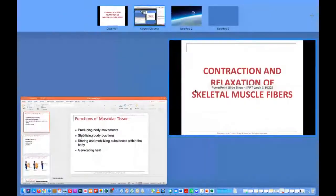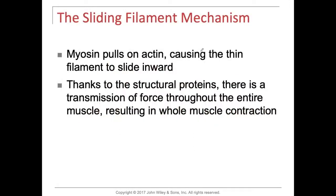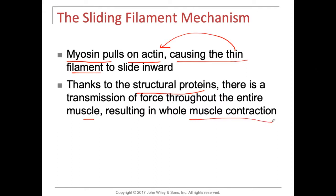Welcome back. We are going to continue our muscle lecture with understanding what takes place with the contraction and relaxation of muscles and the sliding muscle filament theory, which is really just the interaction of actin and myosin. Myosin heads are going to pull on actin, causing the thin filament — remember, the thin filament is actin — to slide inward so that the H zone gets much smaller. Thanks to the structural proteins, there is transmission of force throughout the entire muscle resulting in a whole muscle contraction.